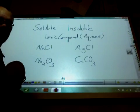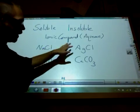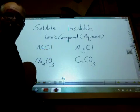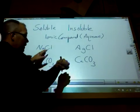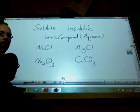For example, here I have a couple of compounds. I have silver chloride and sodium chloride. Now, according to our list, all chlorides or halides are soluble.